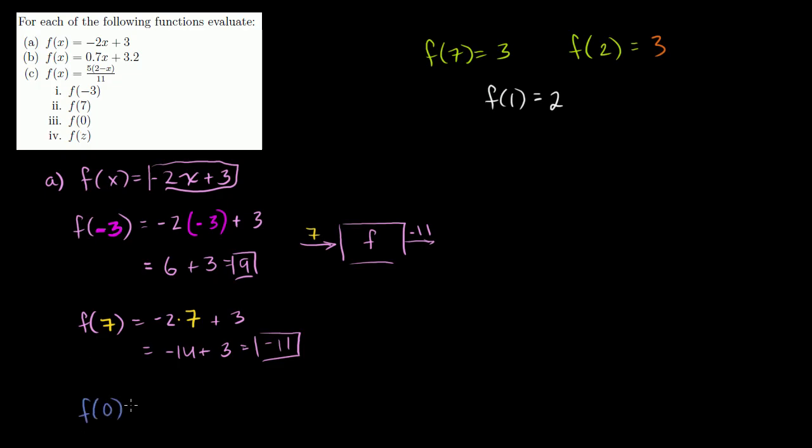Now, we're at f of 0. I'll just do it in one color. f of 0, wherever we see an x, we put a 0. So negative 2 times 0 plus 3. Well, that's just going to be 0. So f of 0 is 3. And then one last one, f of z.